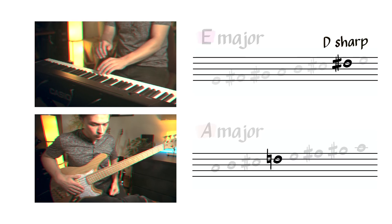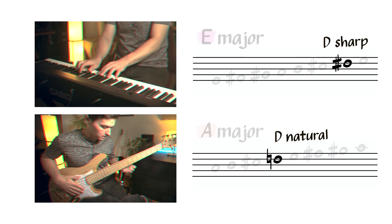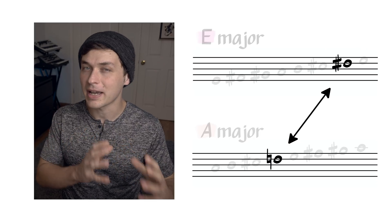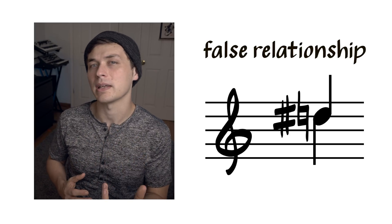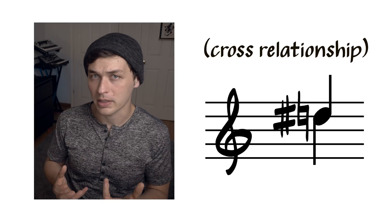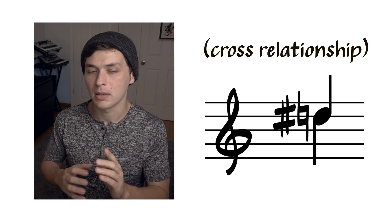D is sharp in the key of E, but natural in the key of A. If you play both D sharp and D natural at the same time, you get something called a false relationship, or a cross-relationship. The same note name, but a different accidental.